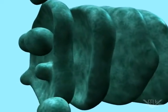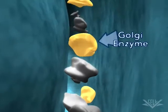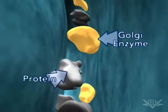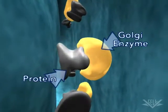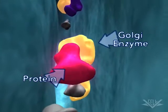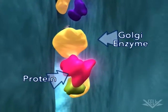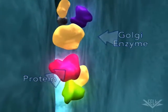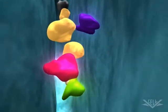As the protein moves through the stack, it is modified by resident Golgi enzymes at specific locations in the apparatus. These modifications are important because they provide the signal that determines the final destination of the protein.